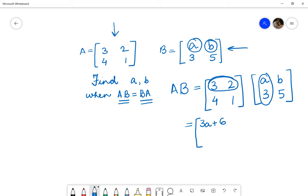Similarly, we multiply row 1 with column 2, that is 3B plus 10. Then coming on to this value which will be row 2 multiplied by column 1, that is 4A plus 3. Then row 2 multiplied by column 2 will be 4B plus 5. So this matrix will give you AB.